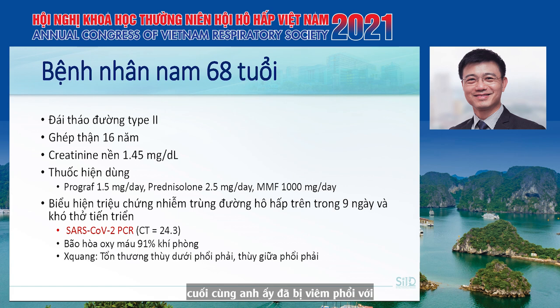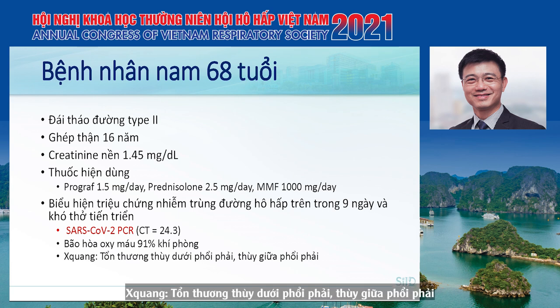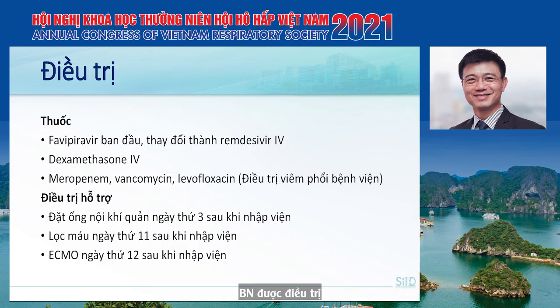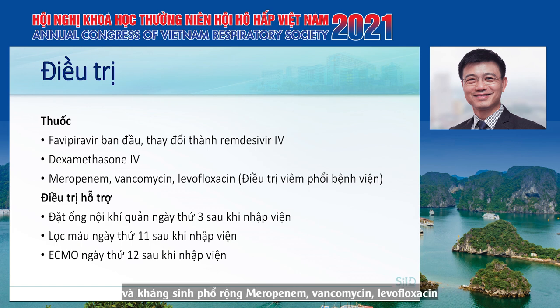He eventually had pneumonia with oxygen saturation dropping to 91%, and chest X-ray showed bilateral infiltration. He received antivirals including favipiravir, and was treated with dexamethasone intravenously along with broad-spectrum antibiotics to treat co-infection with bacterial pneumonia.